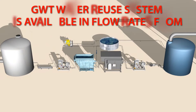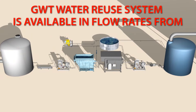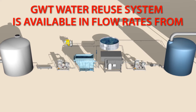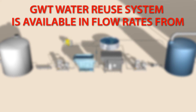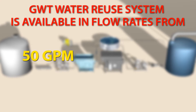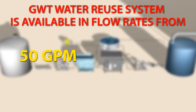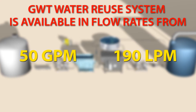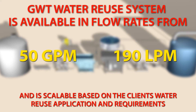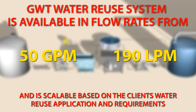These GWT water reuse systems designed for wastewater applications are available in flow rates from 50 gallons per minute or 190 liters per minute, and are scalable based on the client's water reuse application and requirements.